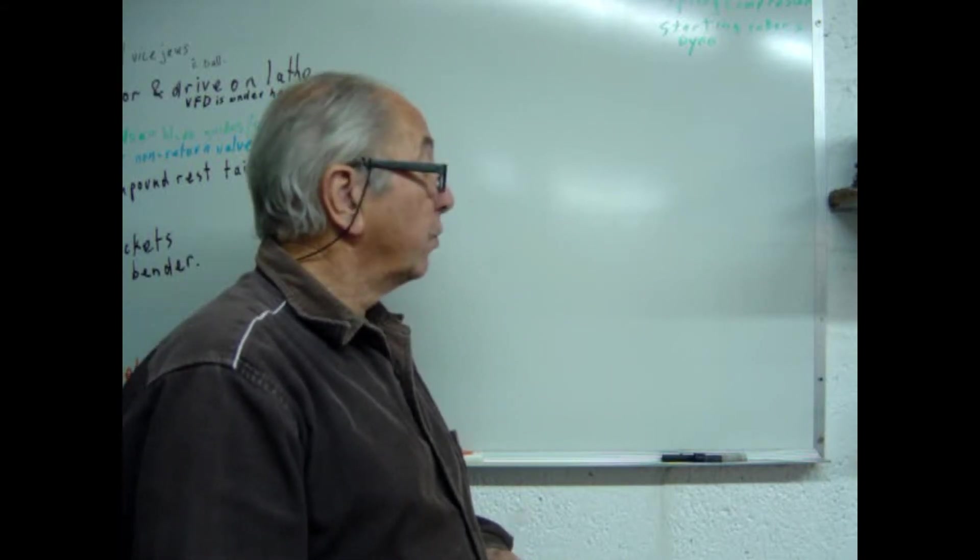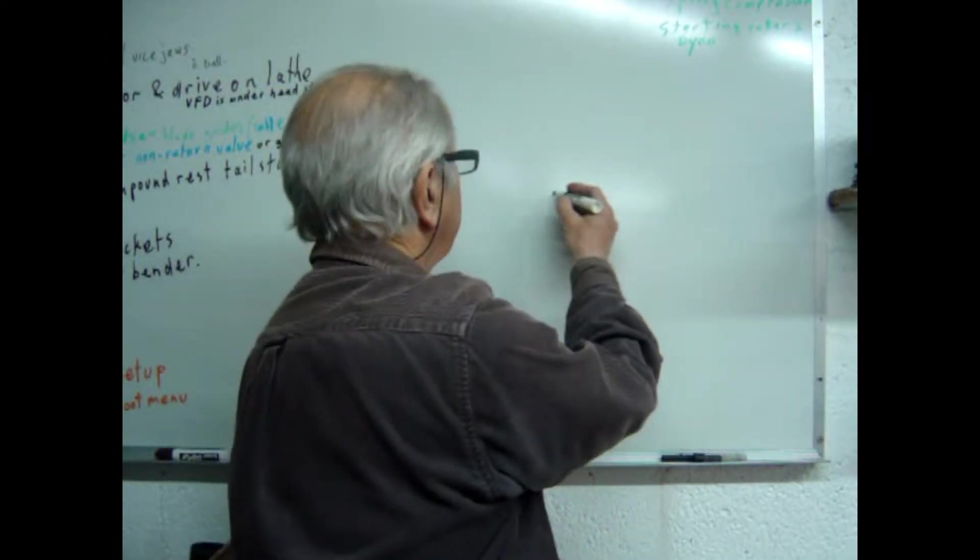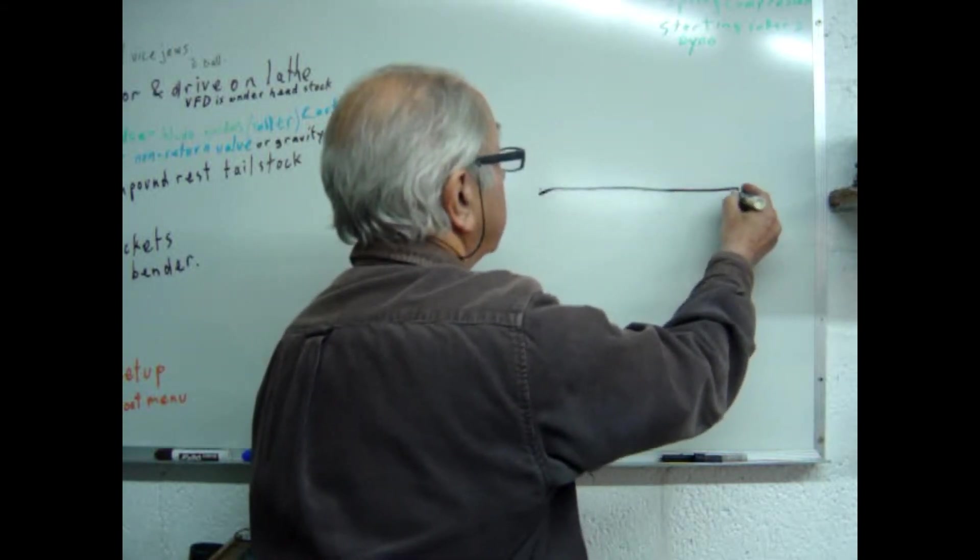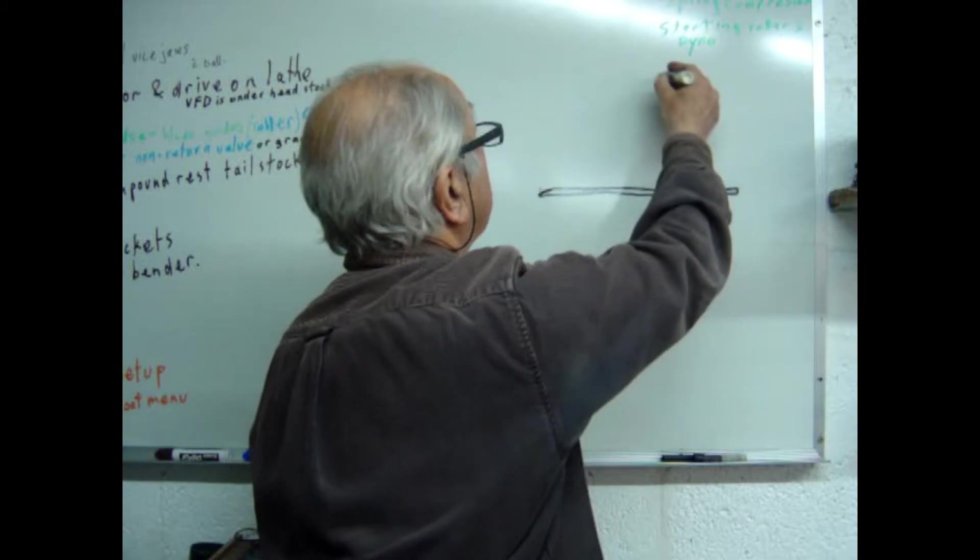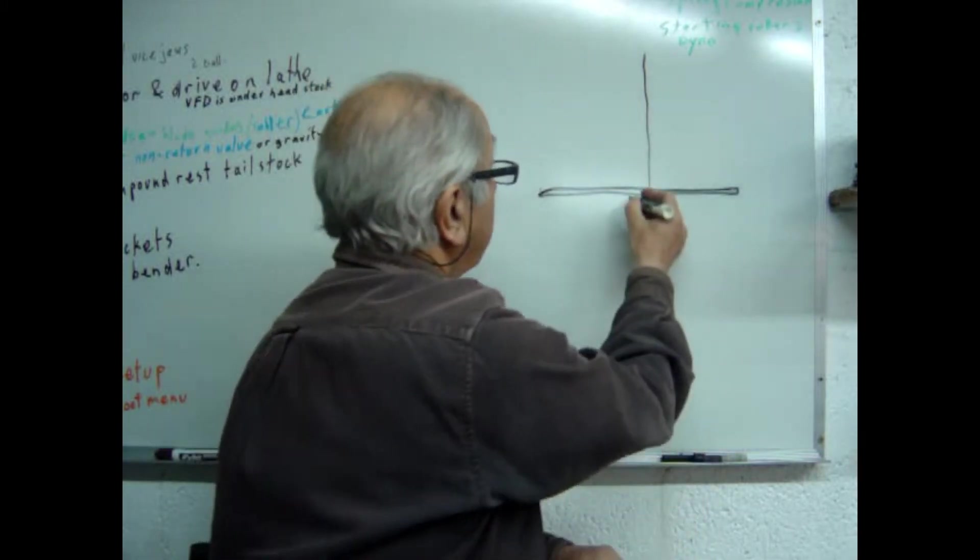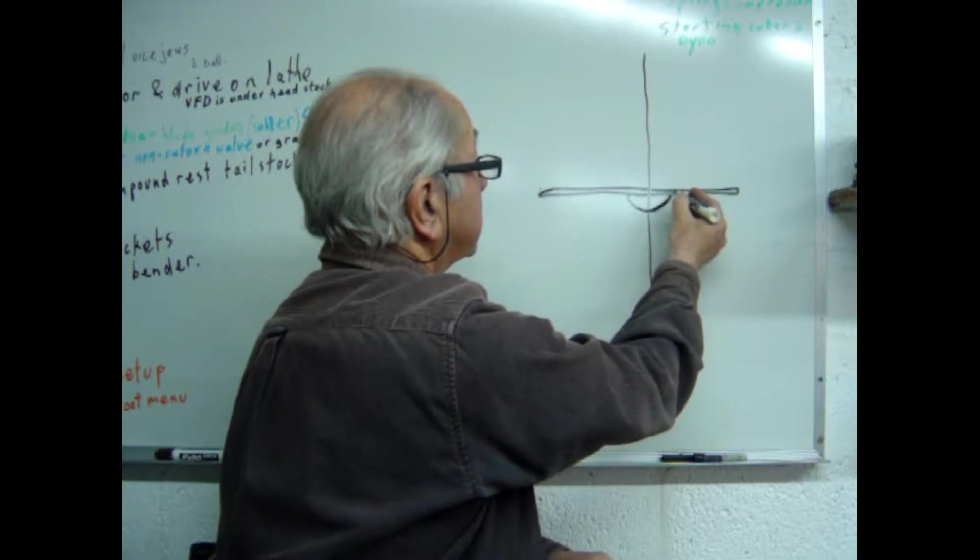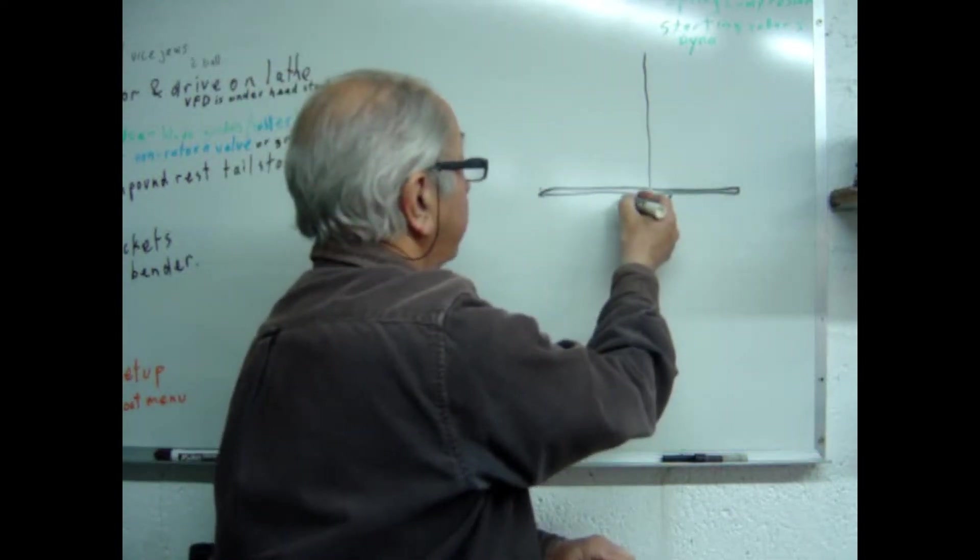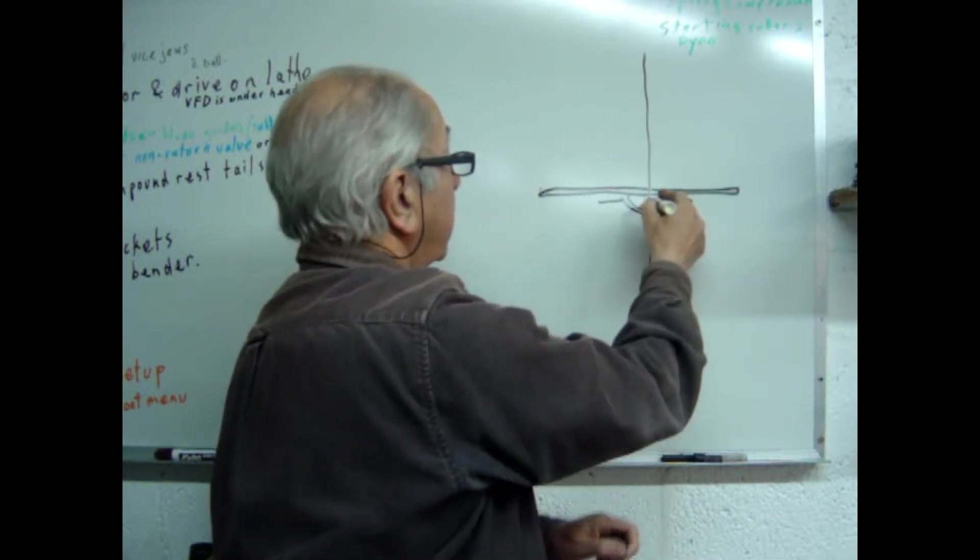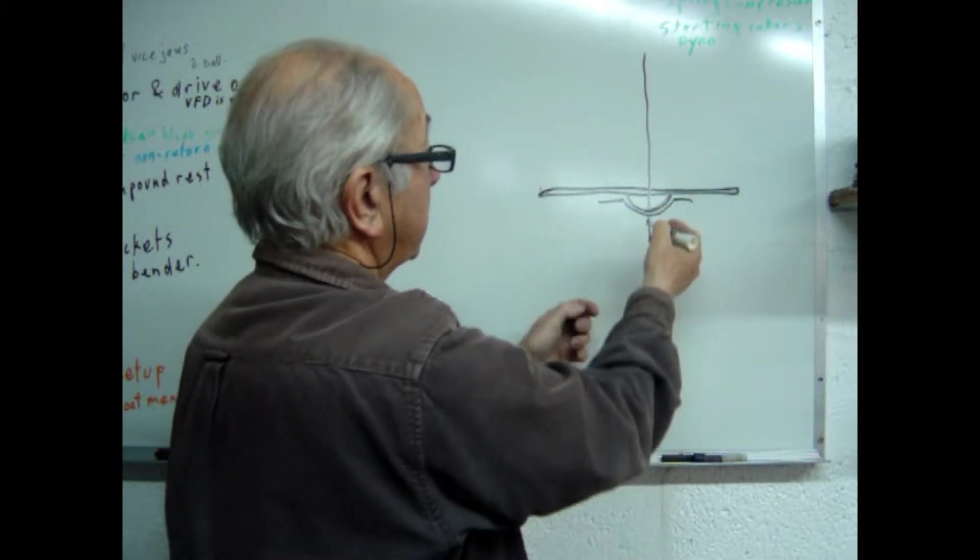The normal way that you see on most bandsaws that have a tilting table, they have a trunnion bearing arrangement. If this is the bandsaw table and this is the bandsaw blade, then they'll have some sort of trunnion bearing here, a piece like that fixed to the table itself and then another piece fixed to the frame of the bandsaw, and these will be clamped together when it's in position.